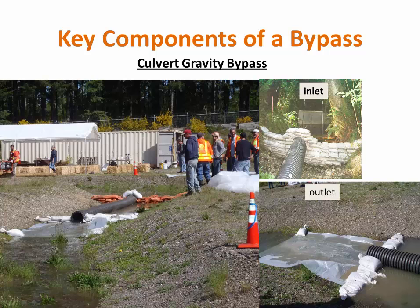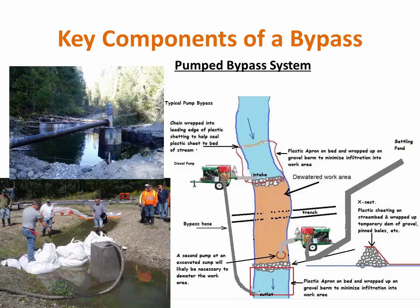Another method used to divert flow is with a pump. Pump bypasses are better for smaller streams or for short durations, for example one to two day projects, and need to be sized to handle all expected flows. While installed, it is recommended that additional pumps are on site should one fail.